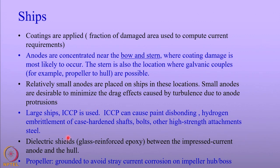In order to separate the impressed current anodes from the hull, dielectric seals are used. These dielectric seals are generally glass-reinforced epoxies that separate the anode from the ship hull.